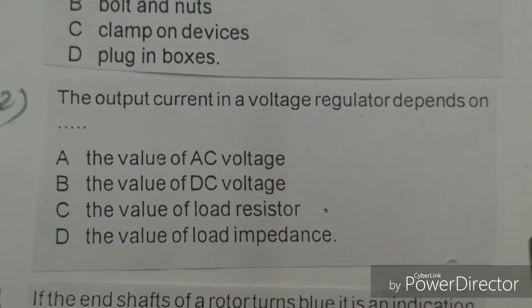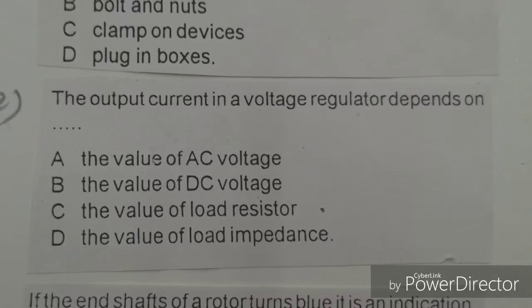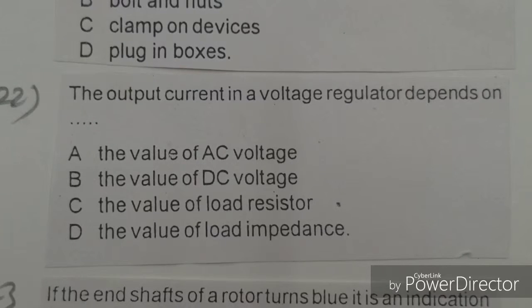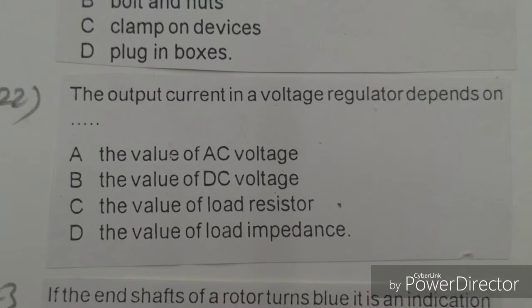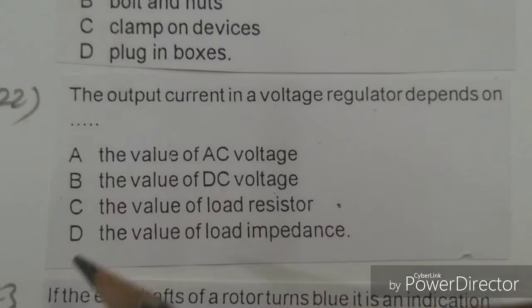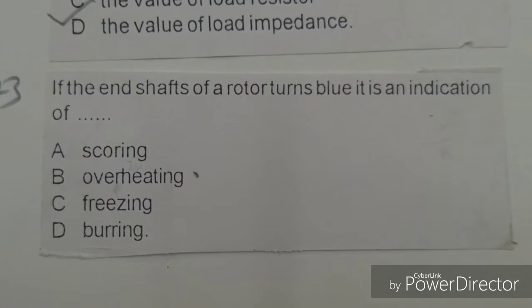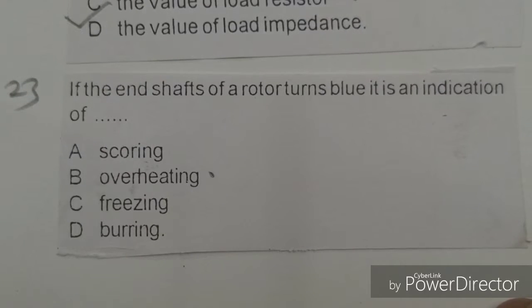Next objective: The output current in the voltage regulator depends on. Options given: the value of AC voltage, the value of DC voltage, the value of load resistance, the value of load impedance. The right answer is C, the value of load resistance. Mark here.